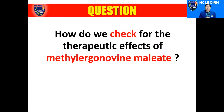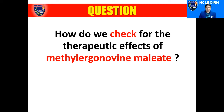Let's go back to the question we posted earlier: How do we check for the therapeutic effects of methyl ergonovin malleate? We need to assess the characteristics of the uterus. If the uterus becomes firm and contracted after administration of the drug, then we can say that the medication has exerted its therapeutic effects.